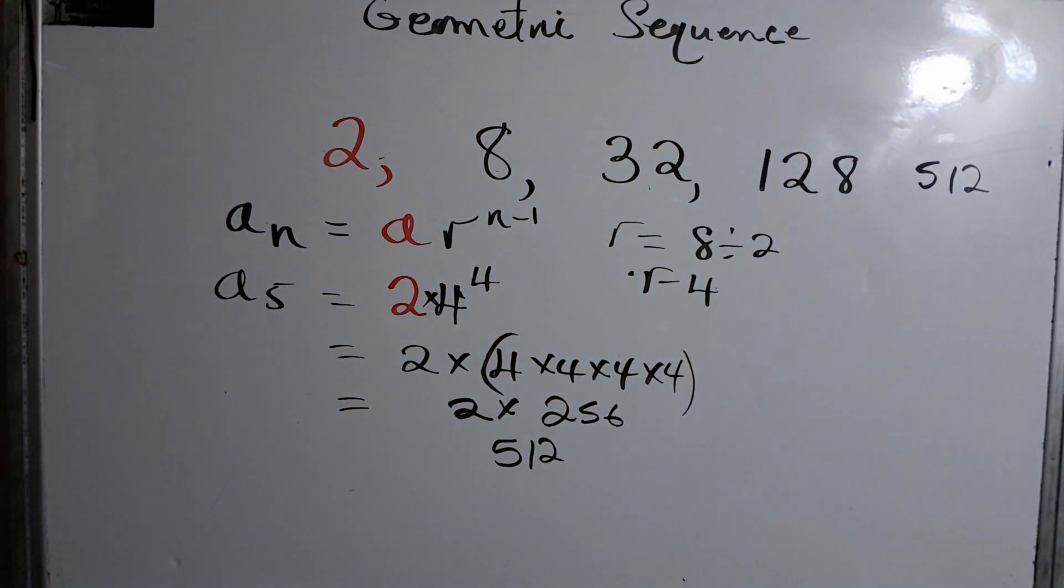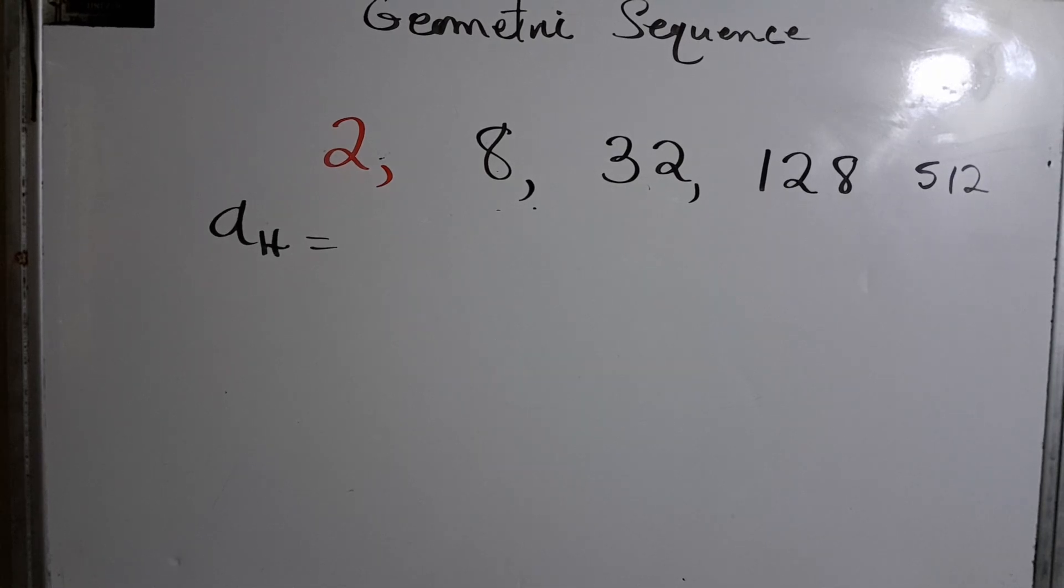All right, let us find one of these that is already there using the formula. Let's say we're going to find the fourth term. So that should work out to 128. Let's put things in perspective. All right, so we already know what the answer should be. It should work out to 128. Let's test it.